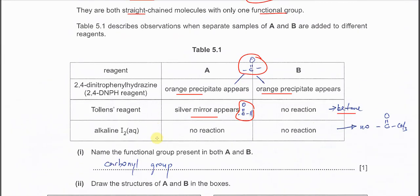And the last one is very important. Because from here we roughly know the structure. Alkaline iodine means iodoform test. If positive, then it will be a yellow precipitate. If negative means no change or no reaction. A and B both no reaction is telling us that B, or A or B, they both don't have this methyl ketone.